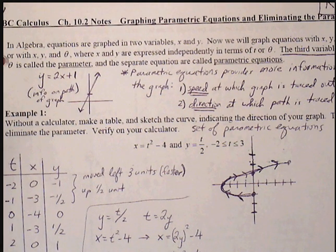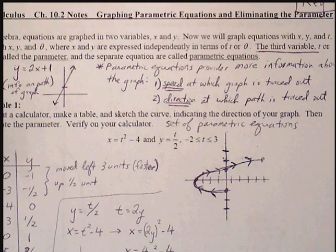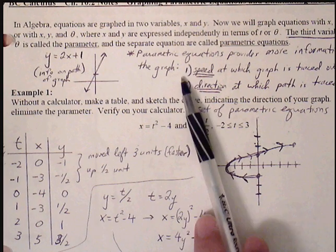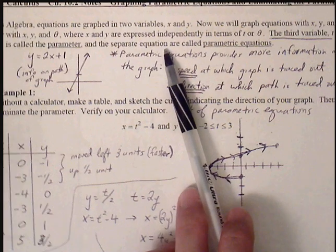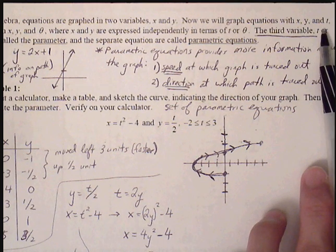Notes on 10.2 graphing parametric equations and eliminating the parameter. So in algebra, equations are graphed in two variables x and y. Now we will graph equations with x, y, and t, a third variable t.